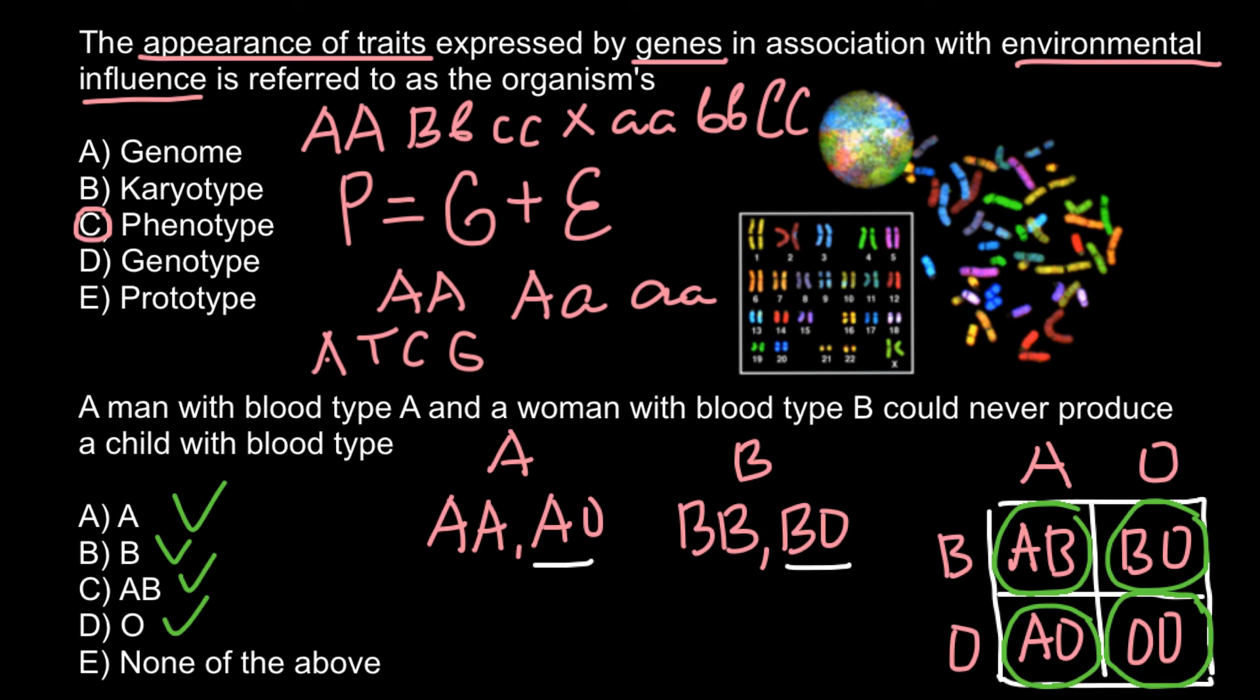But I want to remind you our question: what type of blood type they can never produce in their children? And as you see, the correct answer would be answer E, none of the above. So they may have children that would belong to all four blood groups in the ABO blood group system.